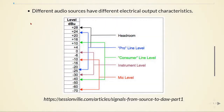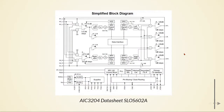Different audio sources have different electrical output characteristics such as voltage level and impedance. For example, the microphone level is lower than the instrument level, which is lower than the line level. We can use a programmable gain amplifier built into the audio codec to change the input gains and adjust the gain according to the source we are using. The PGA goes from 0 to 47.5 dB in steps of 0.5 dB.